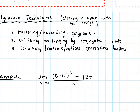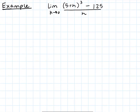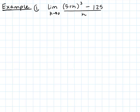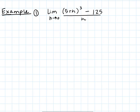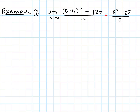Example one: find the limit of (5+h)³ - 125 over h as h goes to zero. The first thing I'll do is try direct substitution — plug in h equals zero. When I do that, I get 5³-125 over 0. We can already see division by zero, which means we can't evaluate the limit as it stands.